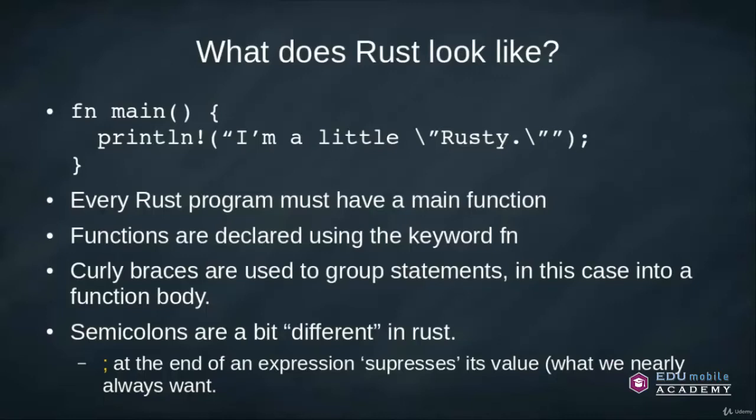Functions are declared using the keyword fn. Curly braces are used to group statements. In Rust, curly braces can be used naked — unlike in C — to define a scope. In a function, they denote the function's scope. Semicolons work a bit differently in Rust, and we'll get into this more later, but bottom line: a semicolon at the end of an expression suppresses its value.